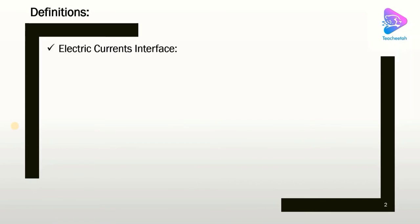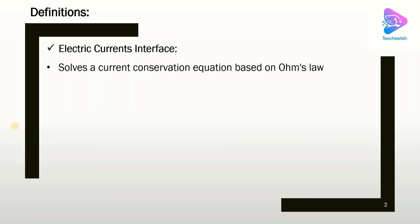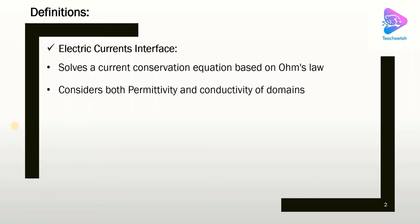The Electric Currents interface is under the AC-DC module, and in this interface we solve a current conservation equation based on Ohm's law. In this modeling we consider both permittivity and conductivity of domains — even if conductivity is very small, it still exists. This is unlike the electrostatics interface, which only deals with permittivity. Electric currents is more interesting when we deal with electric currents and charge flow.